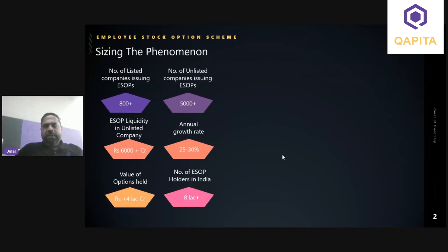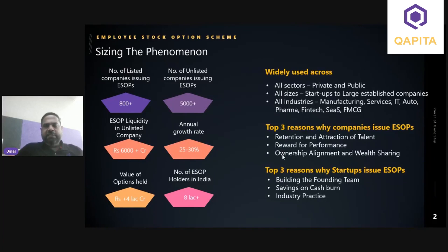In terms of liquidity for unlisted companies, we have seen more than 6,000 crores plus — close to 1 billion dollars — in the last three to four years. The value of options is around four trillion rupees, which is close to 40 billion dollars. The number of ESOP holders in India is somewhere around 800,000. This looks low compared to the organized private sector workforce. In the public sector or government undertakings, we don't see much prevalence of equity compensation as part of total rewards. ESOPs as instruments are used across all sectors — both private and public — across all sizes, and they are sector or industry agnostic. We're seeing this in all major industry verticals including manufacturing, services, IT, pharma, fintech, SaaS, and FMCG.